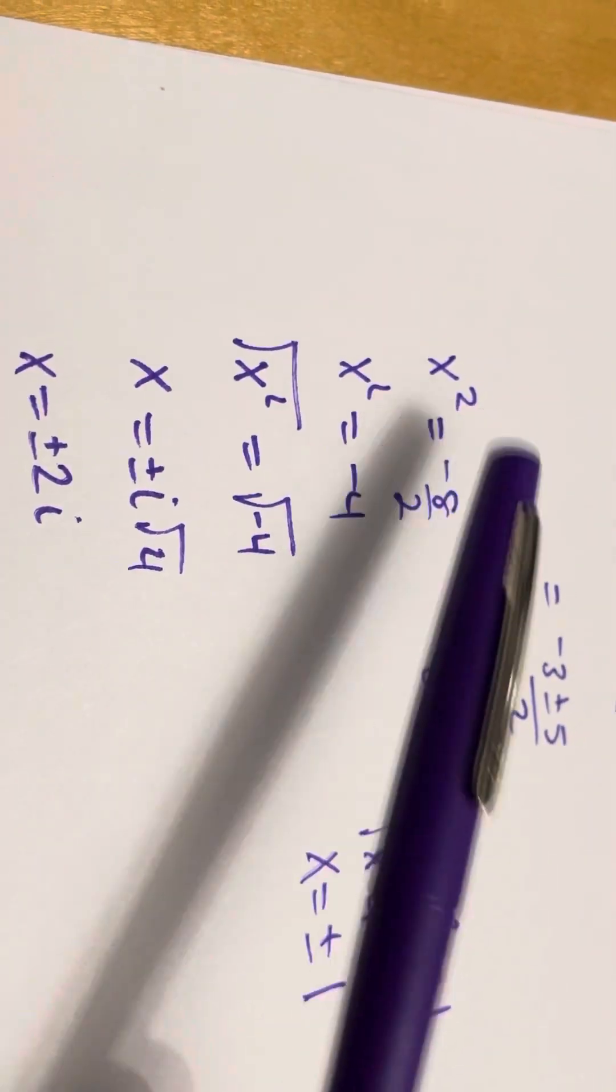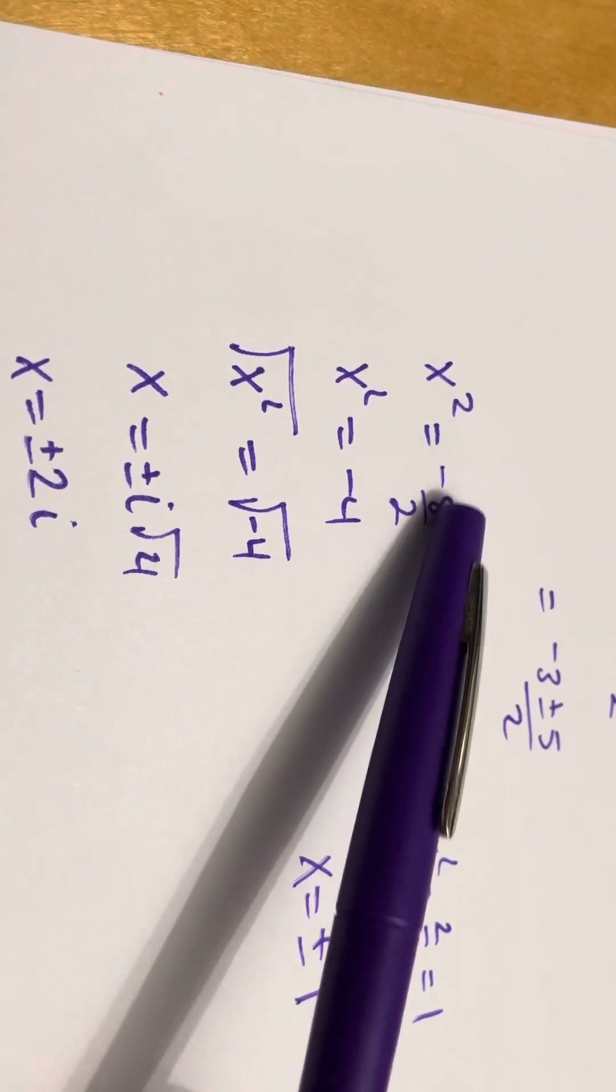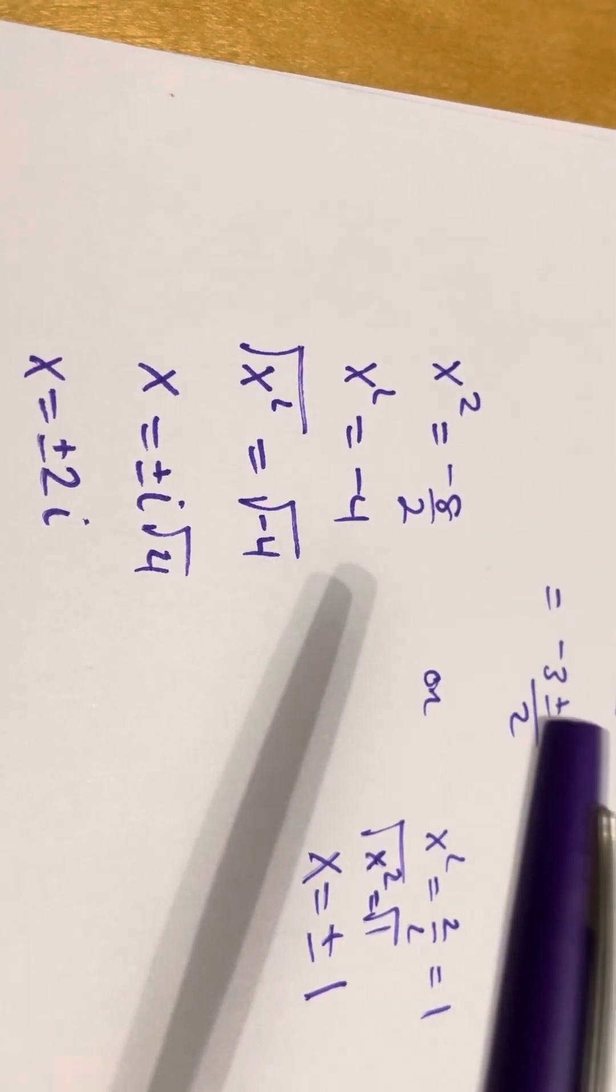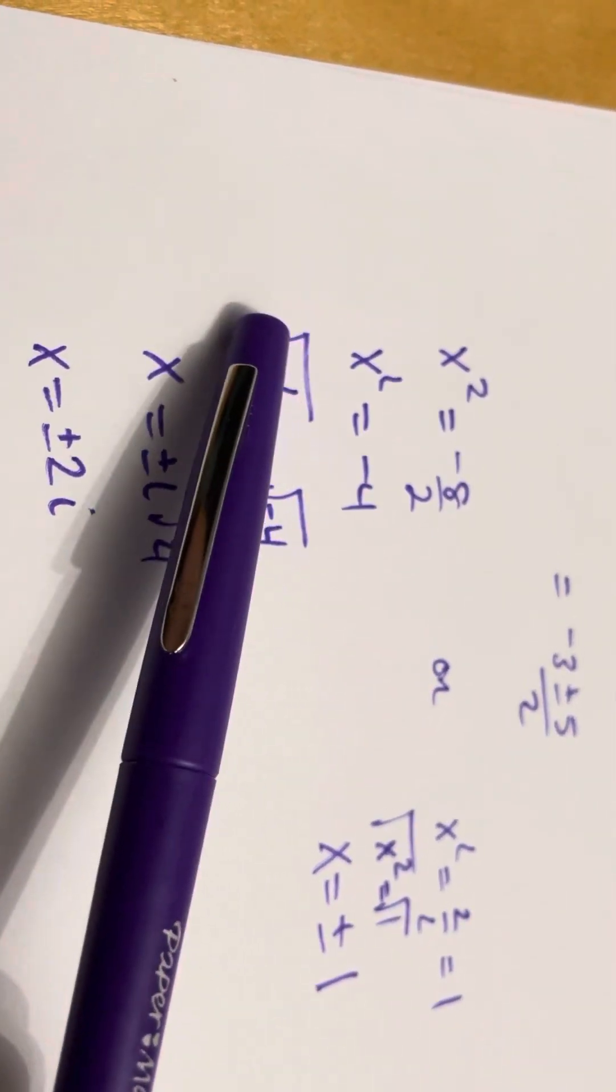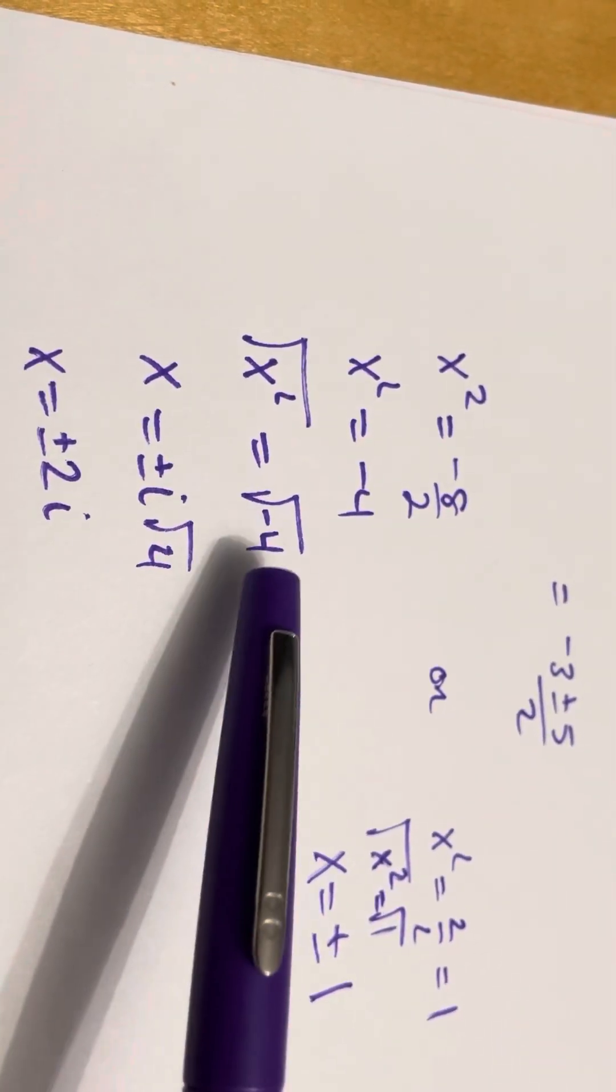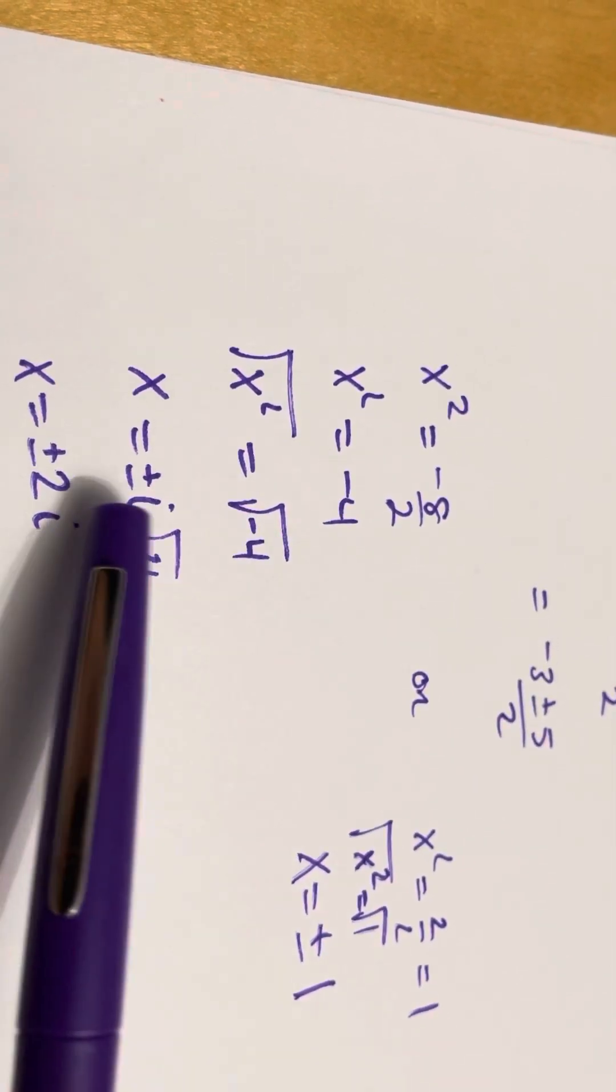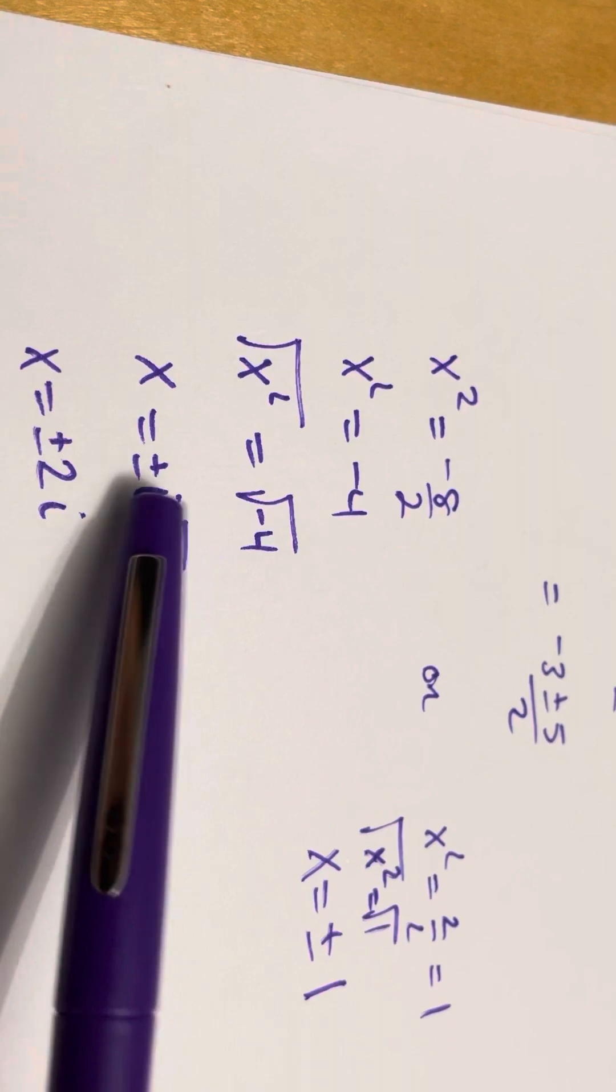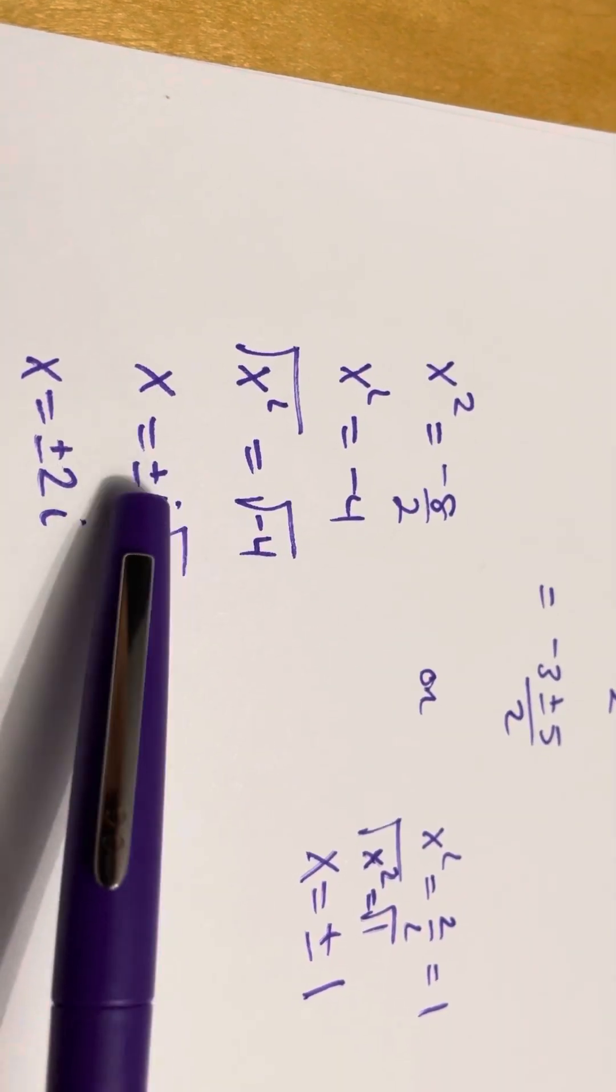Now, I have x squared is equal to negative 8 over 2. Well, negative 8 over 2 is negative 4. And we're going to take the square root on both sides. And we learned that when we have the square root of a negative, i pops out. And so, now we have a positive 4 underneath here with the i out in front.